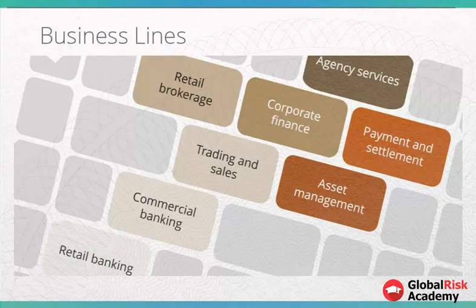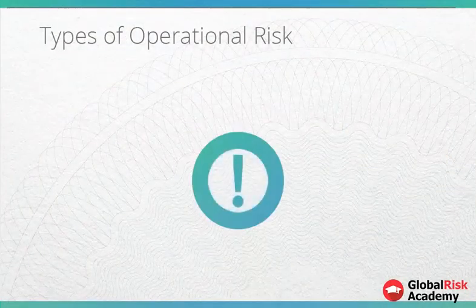In order to collect and organize data, the BASEL Committee on Banking Supervision recommends that operational losses are estimated per different banking business lines and types of risk, known as risk events. The eight business lines include retail banking, commercial banking, trading and sales, retail brokerage, corporate finance, agency services, payment and settlement, and asset management.